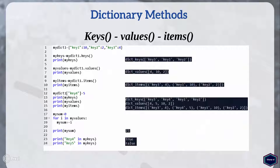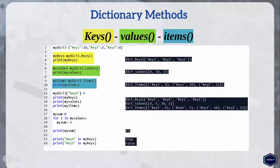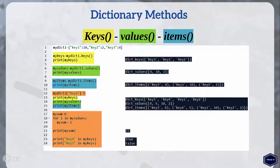Now let's look at the next three methods, which are very similar to each other. They return view objects, which provide a dynamic view on dictionary entries — meaning every time the dictionary object changes, the view objects reflect these changes. The keys method returns a dictionary keys object with a dynamic view on all keys. The values method returns a dictionary values object with a dynamic view on all values. The items method returns a dictionary items object, which is a non-sorted list of all key-value pairs as tuples. All three objects are view objects, they are also iterable, and they support membership tests as shown in this example.